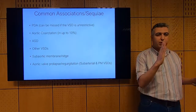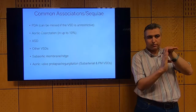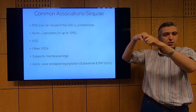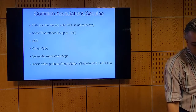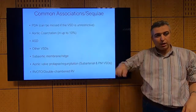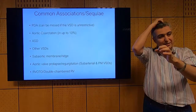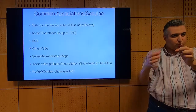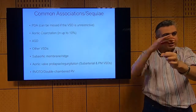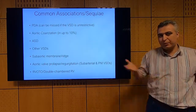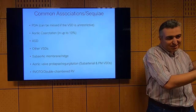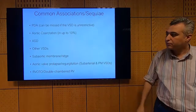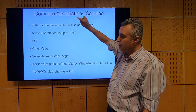When the VSD jet crosses into the right ventricle, it hits the RV wall, causing muscle hypertrophy and fibrosis in the RVOT. This can progress to RV obstruction severe enough to divide the right ventricle into two chambers — a high-pressure inlet chamber containing the VSD, and a lower-pressure outlet chamber above the obstruction. This is called double-chamber right ventricle. It actually protects the pulmonary circulation but must be addressed at the time of VSD closure.